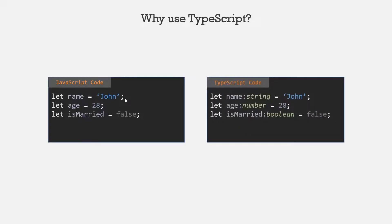In TypeScript, we can specify the data type of a variable explicitly. As you can see, here we are specifying the data type of the name variable as string, the age variable as number, and isMarried as boolean. When we specify the data type explicitly, then only that type of data can be stored in that variable. For example, if I assign a numeric value to the name variable in JavaScript, JavaScript will not throw any error. But in TypeScript, since we specified name as string, assigning a numeric value to it will produce an error.